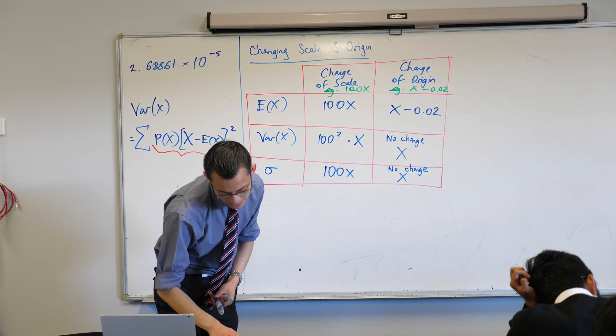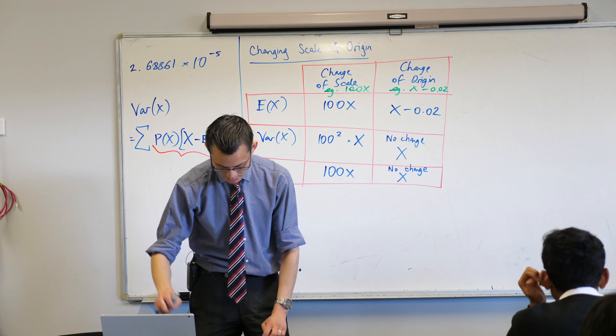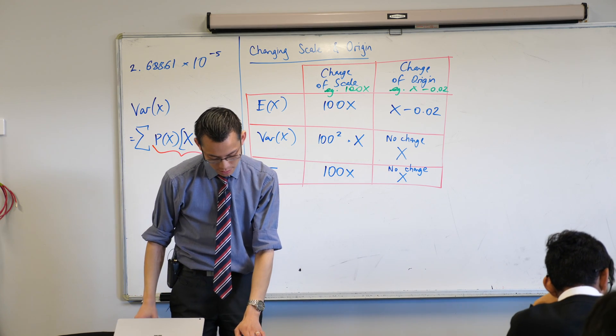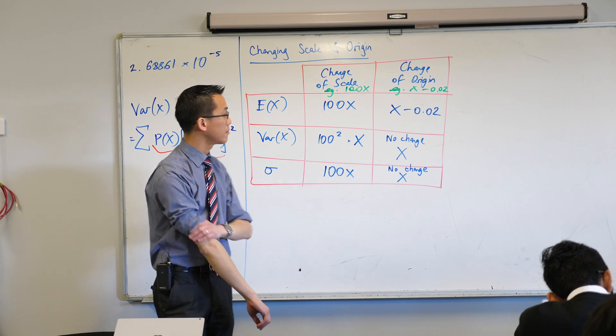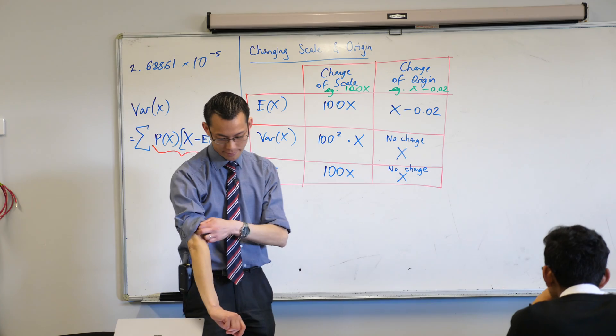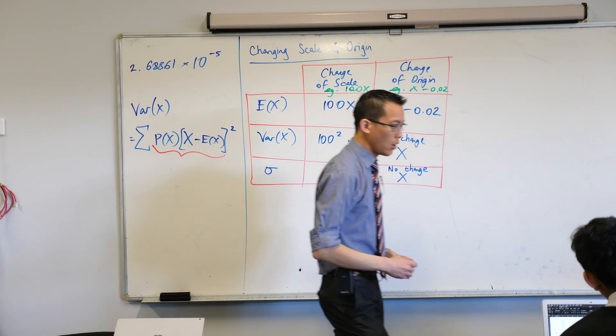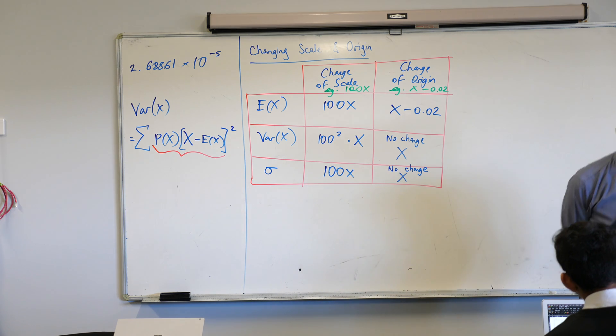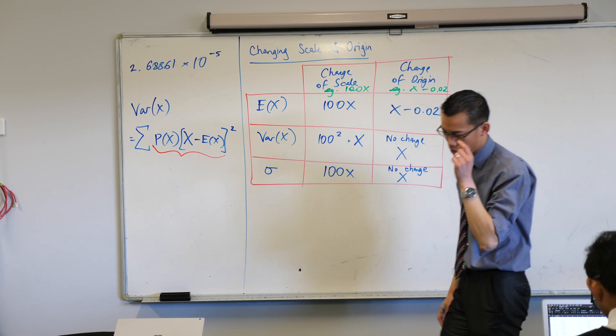So, to show you how we can use this, right, can you turn in your booklet, if you haven't gotten out already, go ahead, turn to page 46. Page 46. Once you get to page 46, there's a discrete random variable there, and we're going to have a look at how it changes. This is question 23.